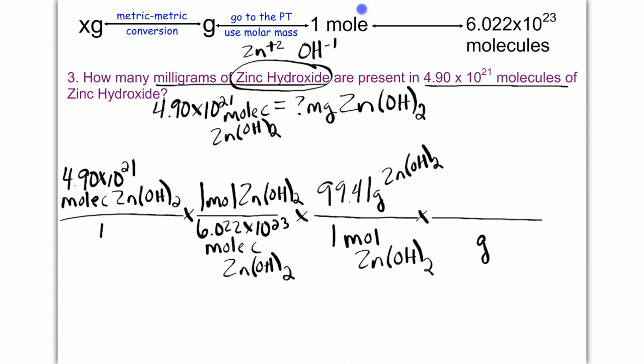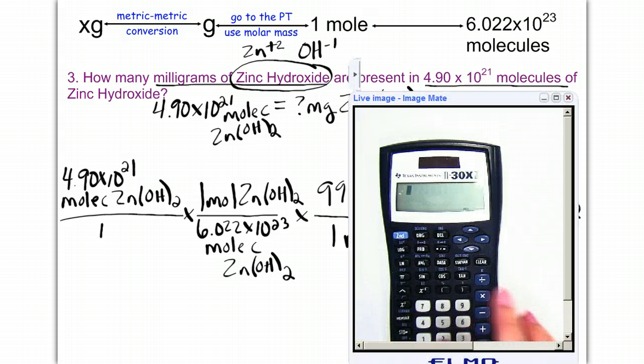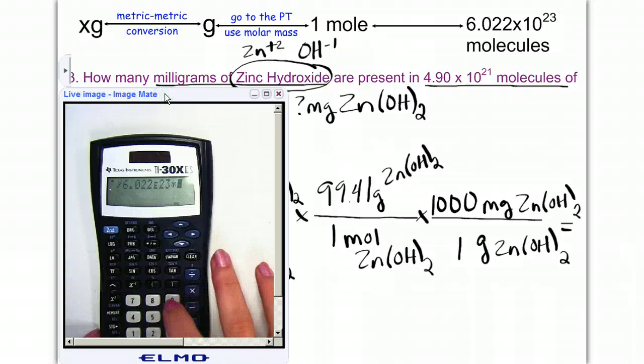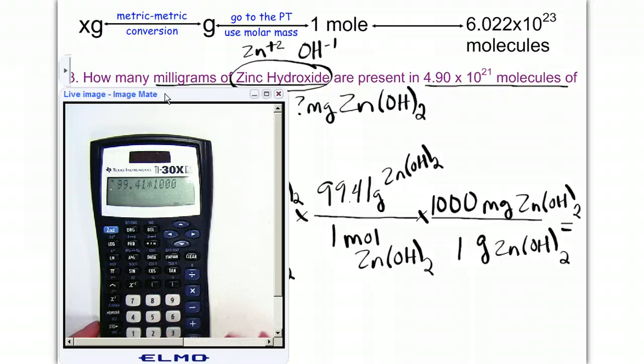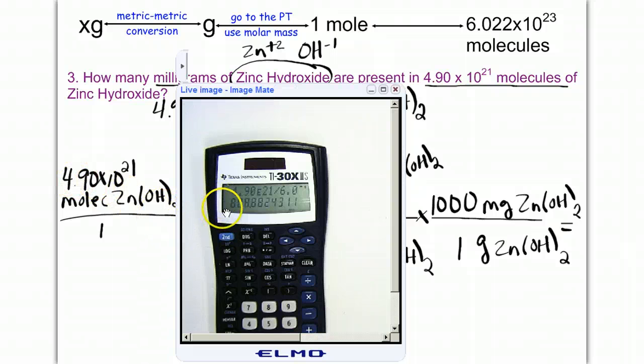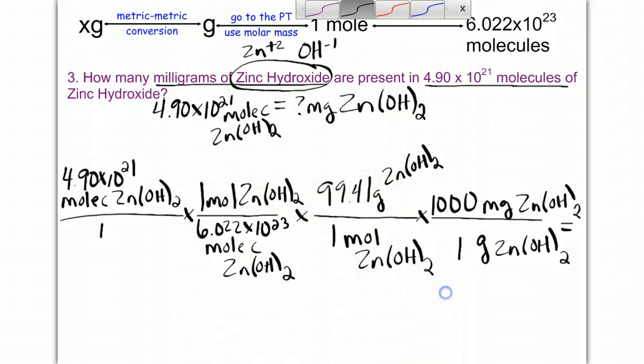Times draw a line. One more step. Bring down grams of zinc hydroxide. And I want to go to milligrams because that's my x-grams. You should know that 1 gram equals 1,000 milligrams. And now we can get our final answer. I'm going to do 4.90 e to the 21 divided by 6.022 e to the 23. I'm going to scoot this over. Times 99.41 times 1,000. And this is what we'll get because our original number has 3 sig figs. Our final answer will only be 3 sigs. So it'll be 809 is our final answer. 809 milligrams of zinc hydroxide.